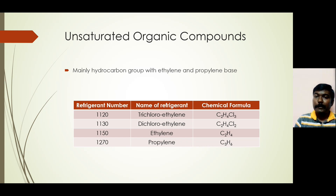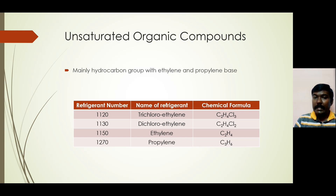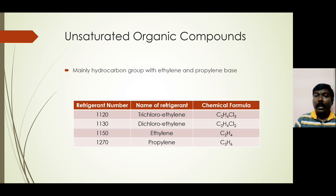So alkenes and alkynes are unsaturated hydrocarbons. Unsaturated organic compounds are also used as refrigerants, mainly the hydrocarbon group with ethylene and propylene base. Some examples are trichloroethylene, dichloroethylene, ethylene, and propylene — all examples of unsaturated organic compounds, all of which either have a double bond or a triple bond.